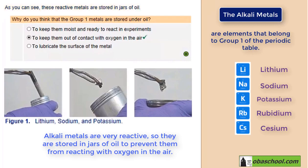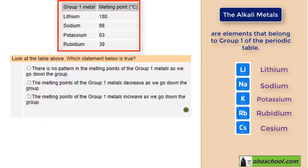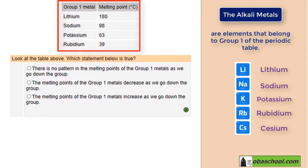Alkali metals are very reactive, so we store them in jars of oil to prevent them from reacting with oxygen in the air. This table here shows you group 1 metals and their melting points: lithium at 180°C, sodium at 98°C, potassium at 63°C, and rubidium at 39°C.